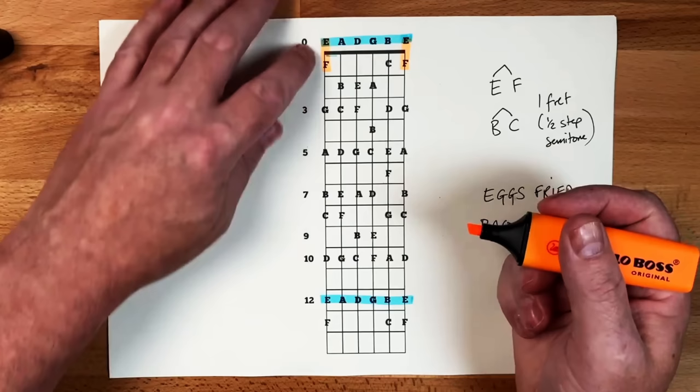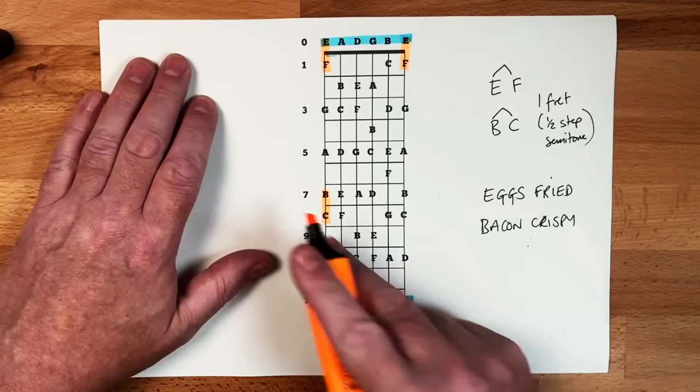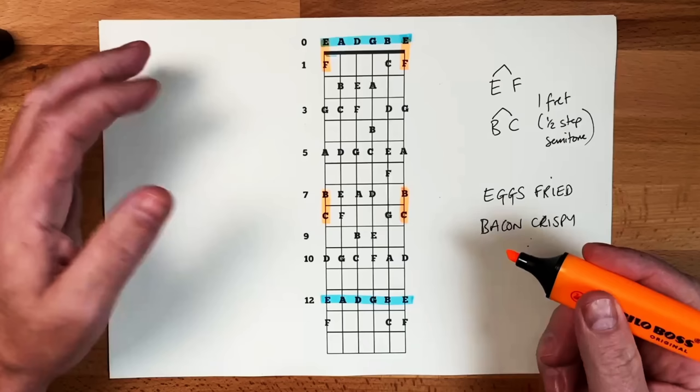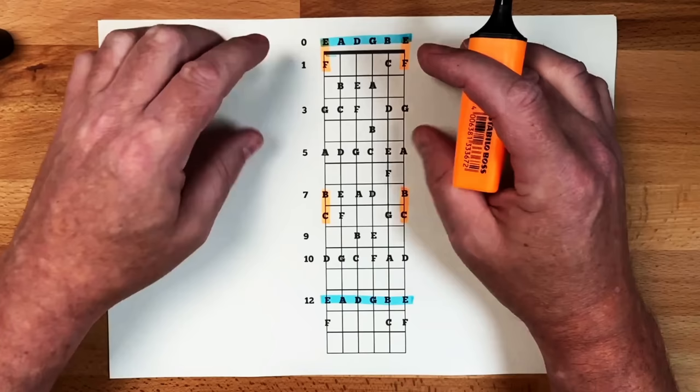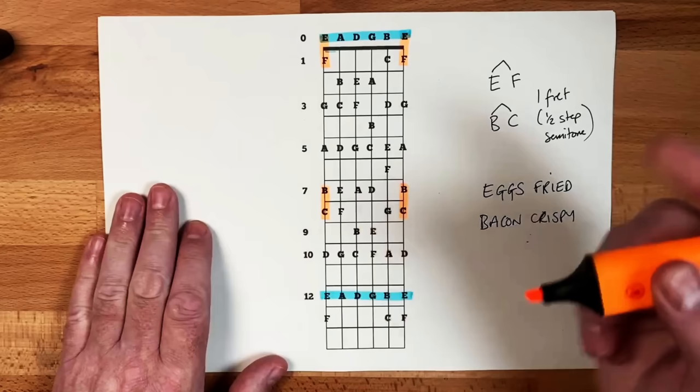Now, as you can see, as I come up this E string, you can see I get B and C a half step or one fret apart from each other. I'm going to mirror that over onto the thin E string as well there so you can see that relationship. And just to reiterate this idea that the zero fret is the same as the 12th fret, you can see that we get a repeat of E and F and E and F there.